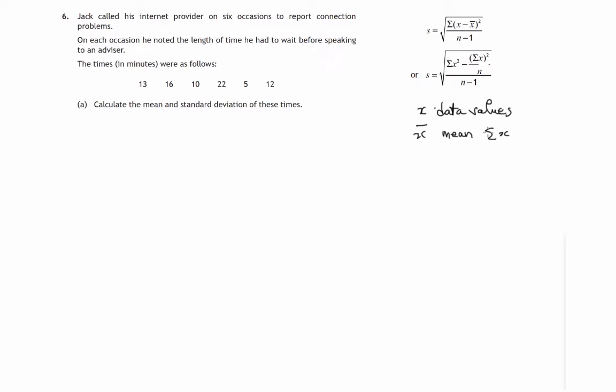That's the sum of all these x's divided by the number of data values. In this case there's six, so that's what n stands for - number of data values. So that's what all these little letters stand for.